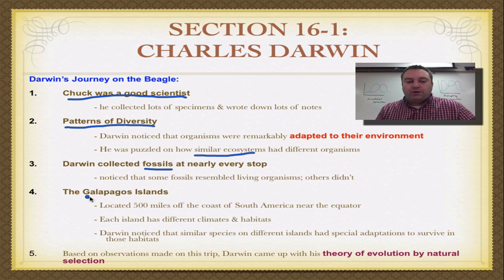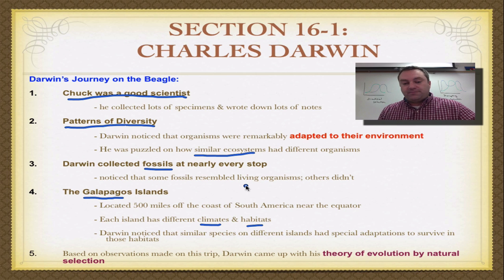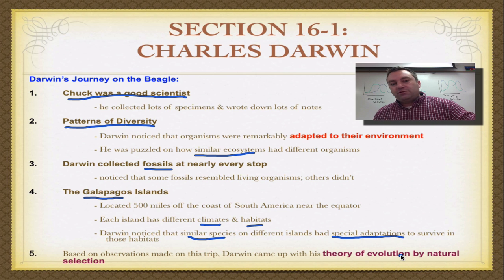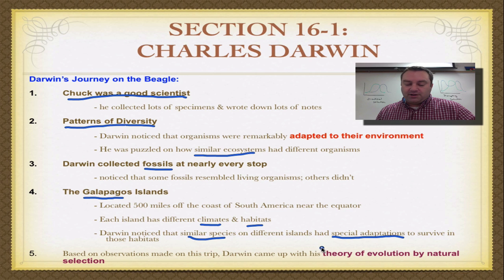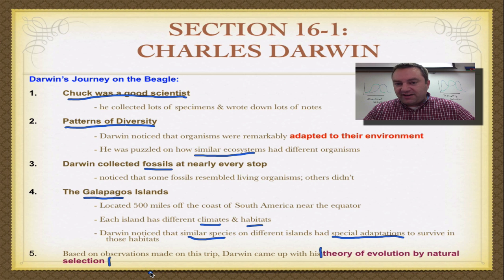The Galapagos Islands were really, really important to Charles. Located off the western coast of South America, practically on the equator, each island has different climates and habitats, meaning different selection pressures. He noticed that there were similar species on the different islands, but they all had special adaptations to survive in their particular environment. Based upon his observations on this trip, he began to develop what he called his theory of evolution by natural selection. In a future episode in this series, we're going to talk in more detail about what natural selection actually is. This is the first of a five-part series — catch you on the flip side.